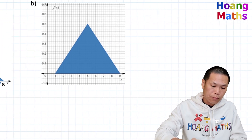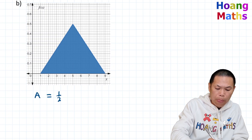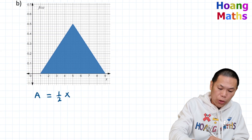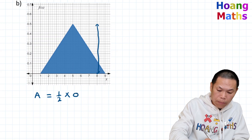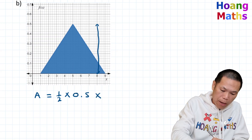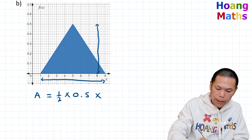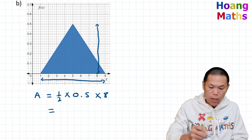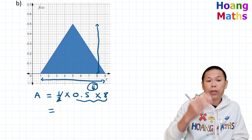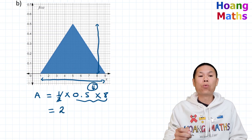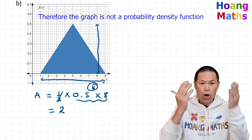Part B. The area of this triangle is a half times the perpendicular height, which is 0.5, times the base. The base runs from one unit to nine, so nine minus one is eight. So 0.5 times eight is four, and half of four is two. That doesn't equal one, so this graph is not a probability density function.